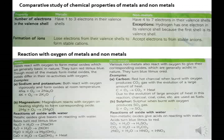Number of electrons in the valence shell: metals have one to three electrons in the valence shell. Non-metals have four to seven electrons in the valence shell. Exception — Hydrogen has one electron in its first shell. Formation of ions: metals lose their valence electrons to form stable cations (positive ions).